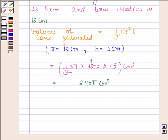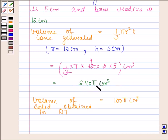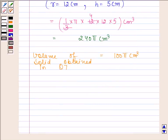Now we have to find the ratio of the volumes of the two solids obtained in question 7 and question 8. Volume of solid obtained in question 7 is 100π cm³, and volume of solid obtained in this question is 240π cm³.